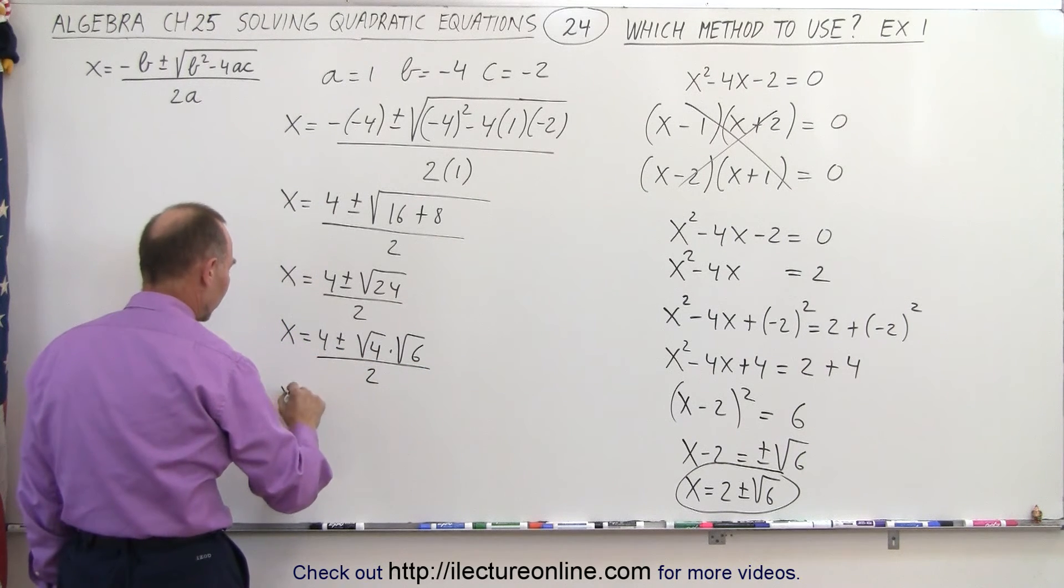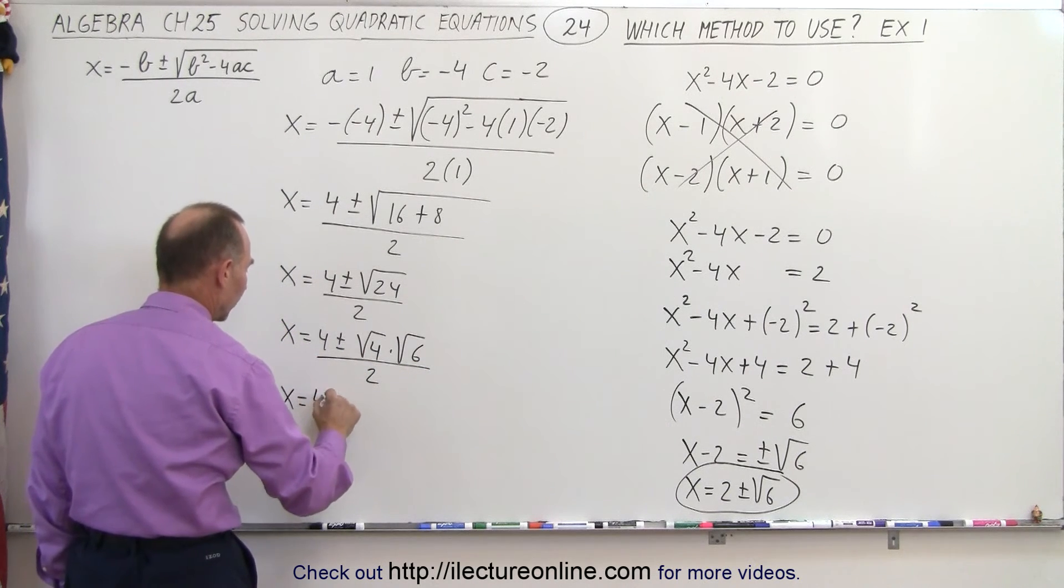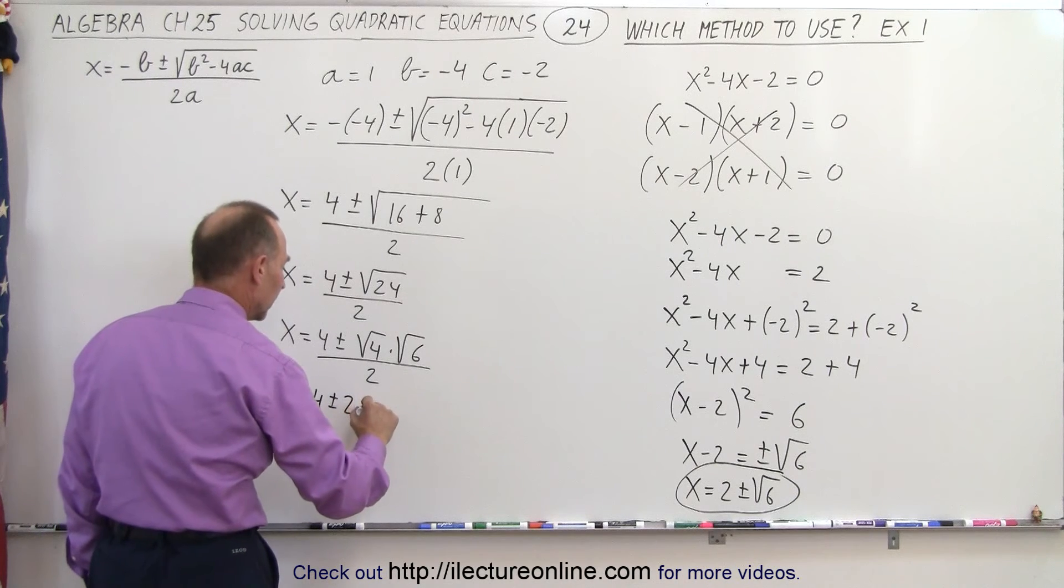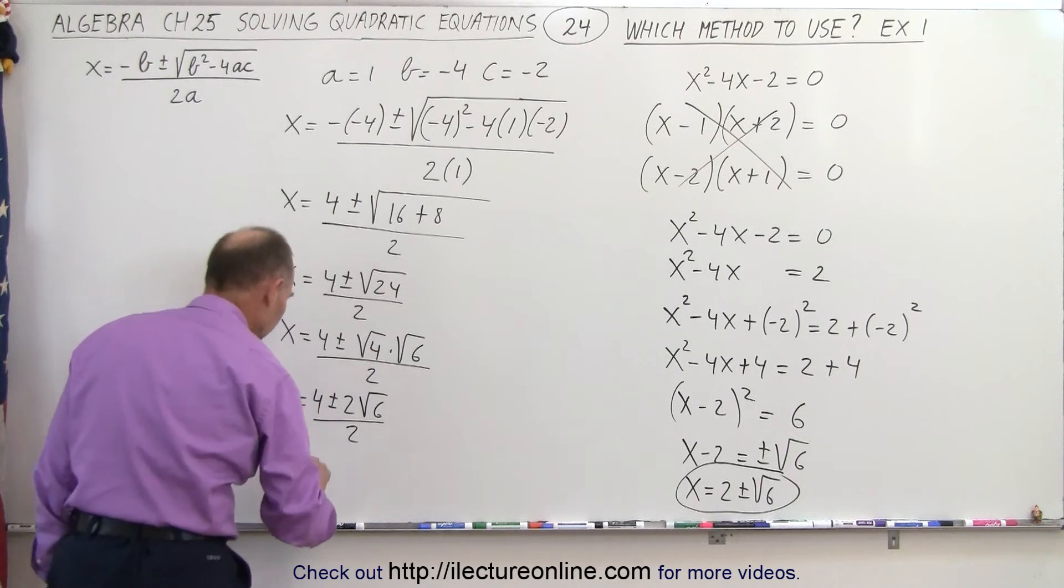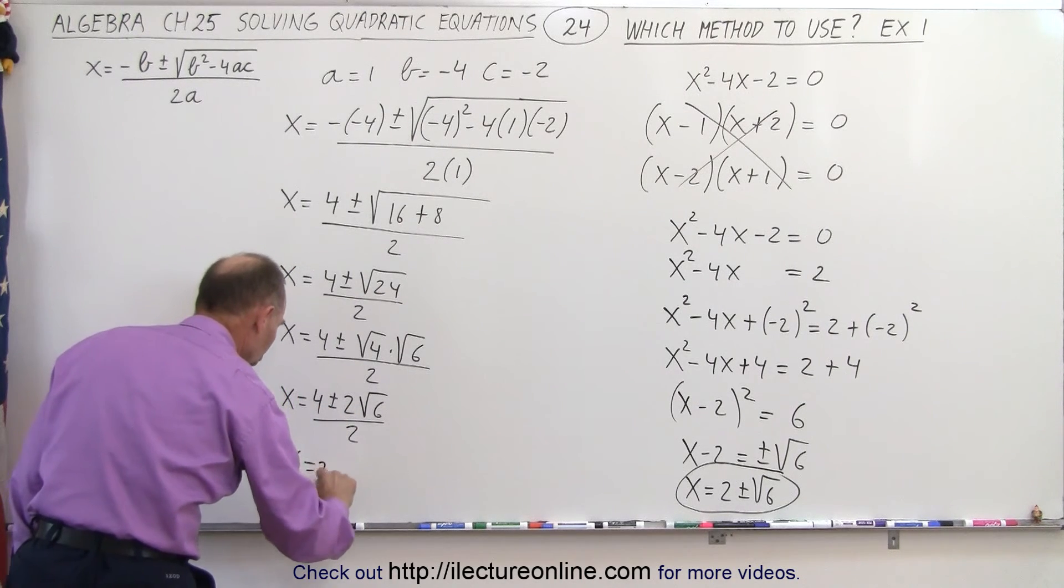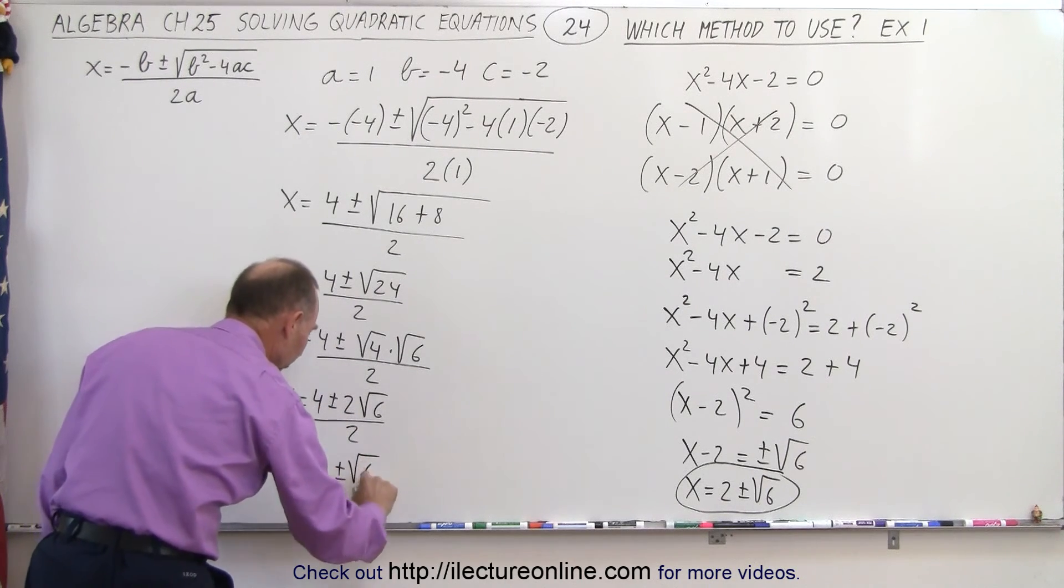And then we can write this as x is equal to four plus or minus two times the square root of six over two. And then divide the two in both terms in the numerator. So we have x is equal to two plus or minus the square root of six.